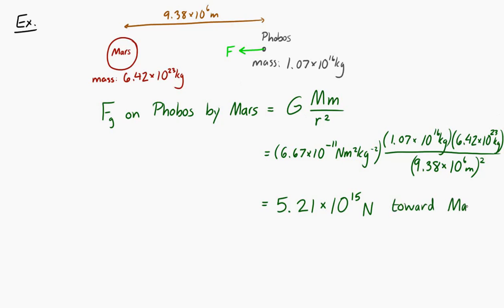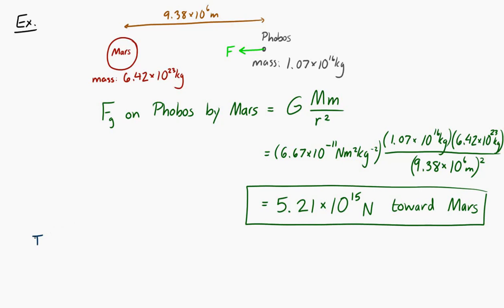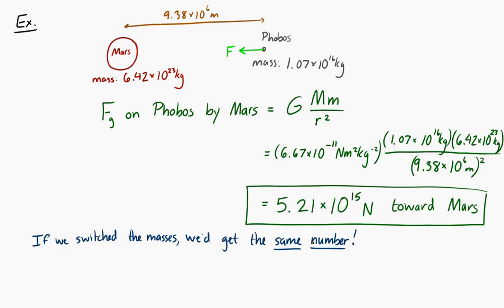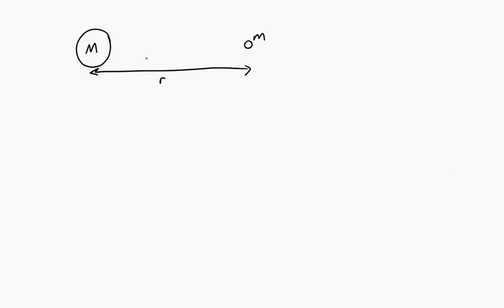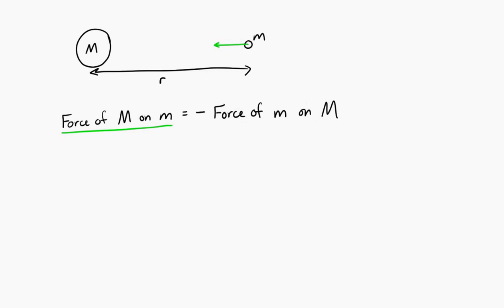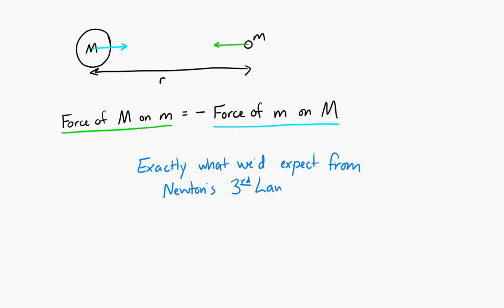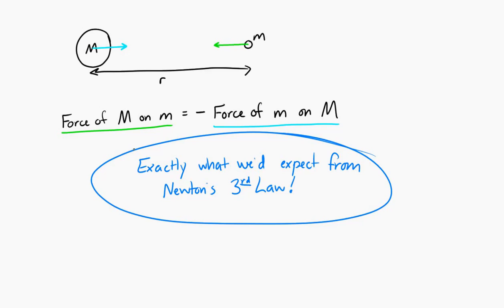Notice that if we were to switch the two masses, we'd get the exact same number because they're being multiplied together. That relates Newton's universal law of gravitation to Newton's third law: for two masses M and m separated by distance r, the force of the larger mass on the smaller is equal and opposite to the force of the smaller on the larger. Newton's third law is essentially baked into Newton's universal law of gravitation.